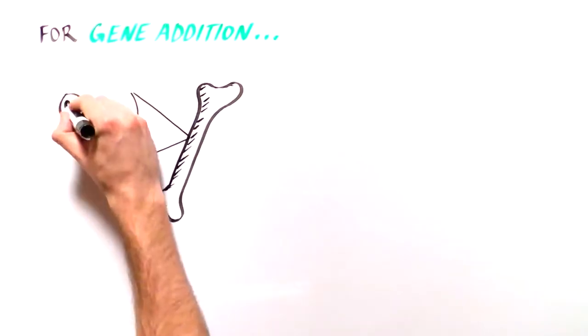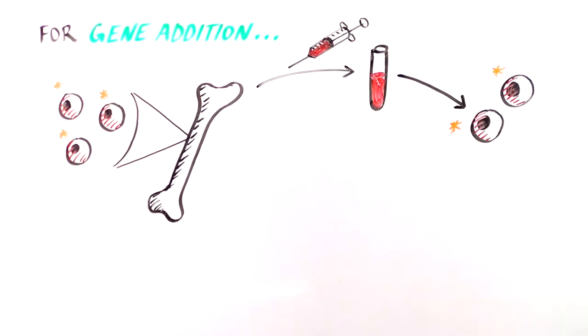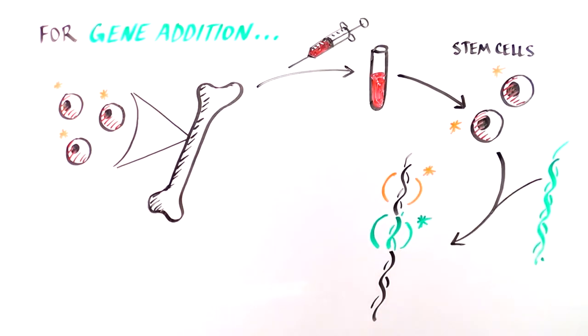First, bone marrow from SCID patients is removed and the stem cells are purified. Then researchers make a piece of DNA that has the correct non-mutated DNA sequence in the gene that needs fixing. They then insert this normal DNA into the HSCs from SCID patients.